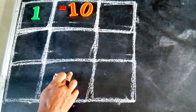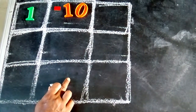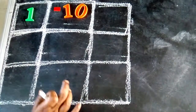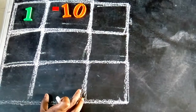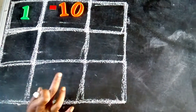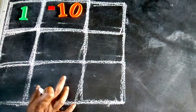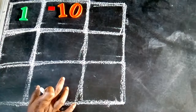Good morning students. Are you ready? Today I brought one magic square for you. In a magic square, each row, column and diagonal have the same sum.